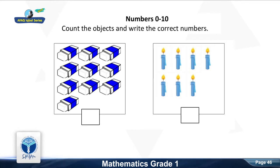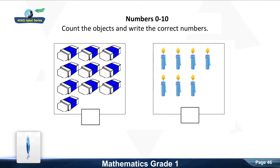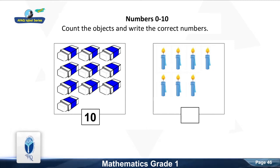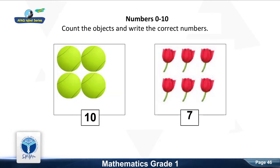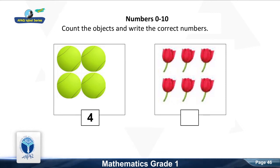Count the objects and write the correct numbers. Count the erasers. Good, it is 10. Count the candles. Good, it is 7. Count the balls. Good, it is 4. Count the flowers.